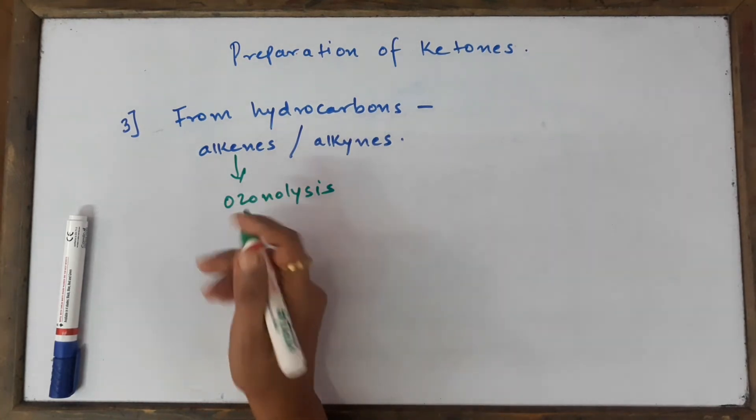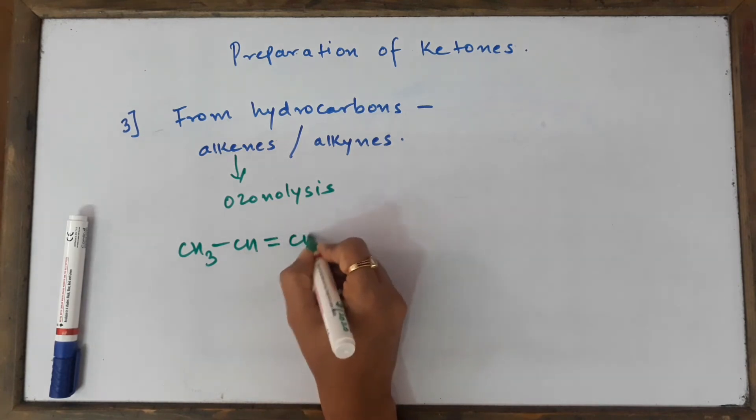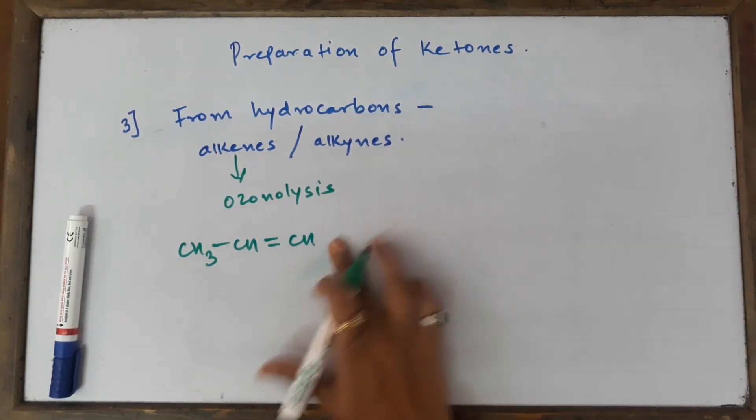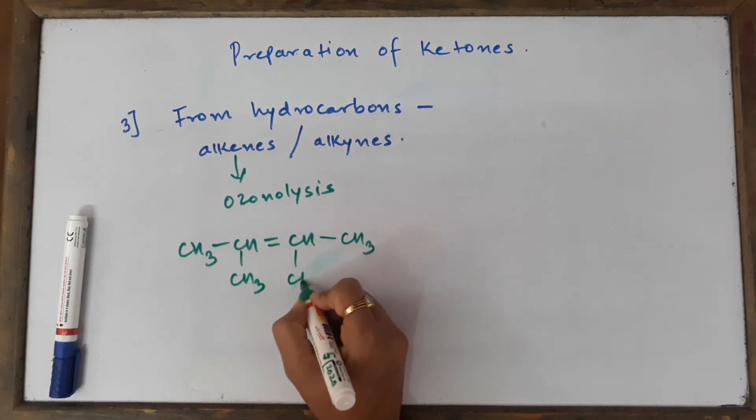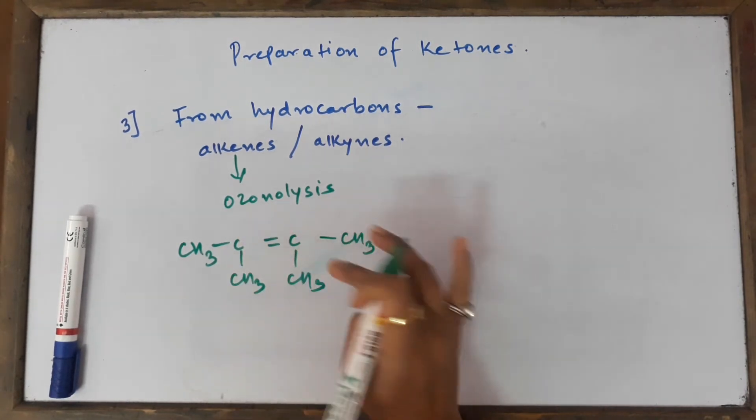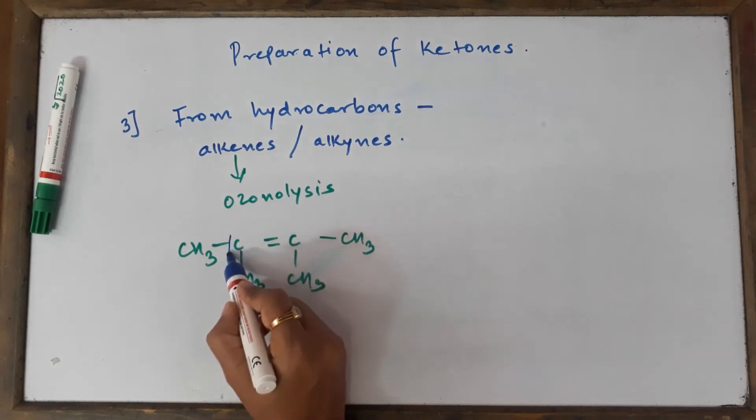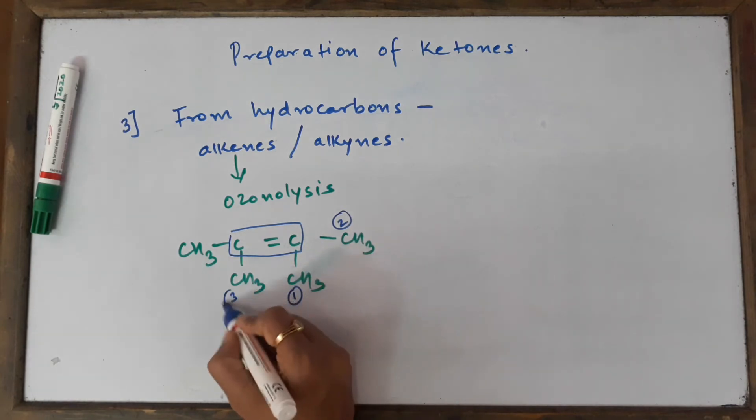So for alkenes, let's take any alkene. For example, CH3-CH=CH2. I'll have to attach methyl groups over here because if I put H here I'm going to get aldehyde. Now this alkene is a tetra-substituted alkene. You can see the double bonded carbon atoms—if you focus, they are attached to four substituents: one, two, three, and four.